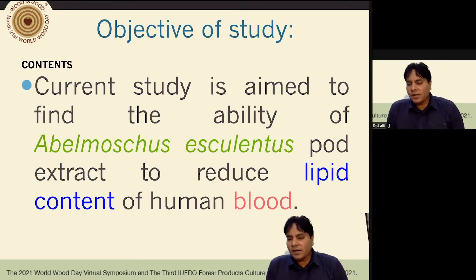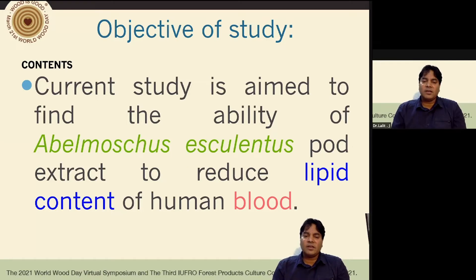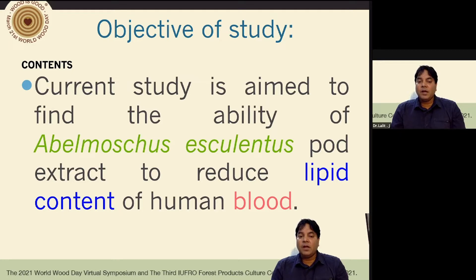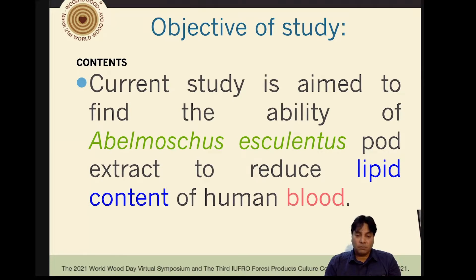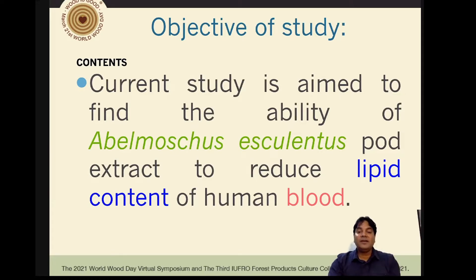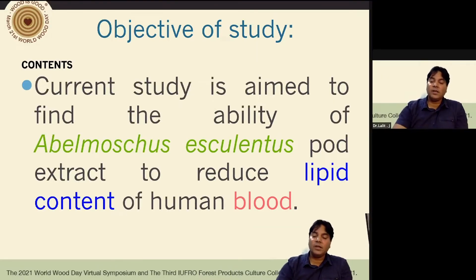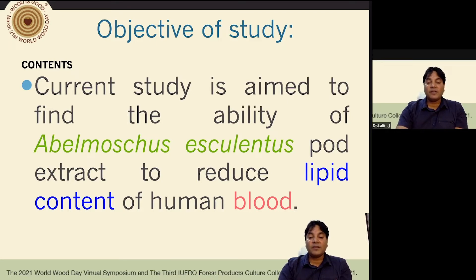The objective of the current study was to find a solution for hyperlipidemia based on the pod extracts of Abelmoschus esculentus. This plant, commonly called okra or gumbo, is usually grown in tropical and sub-tropical countries as a vegetable crop, but before it was identified as a vegetable crop, it was growing wild in the forest. The study is aimed to find the ability of Abelmoschus esculentus pod extract to reduce lipid content in the blood.